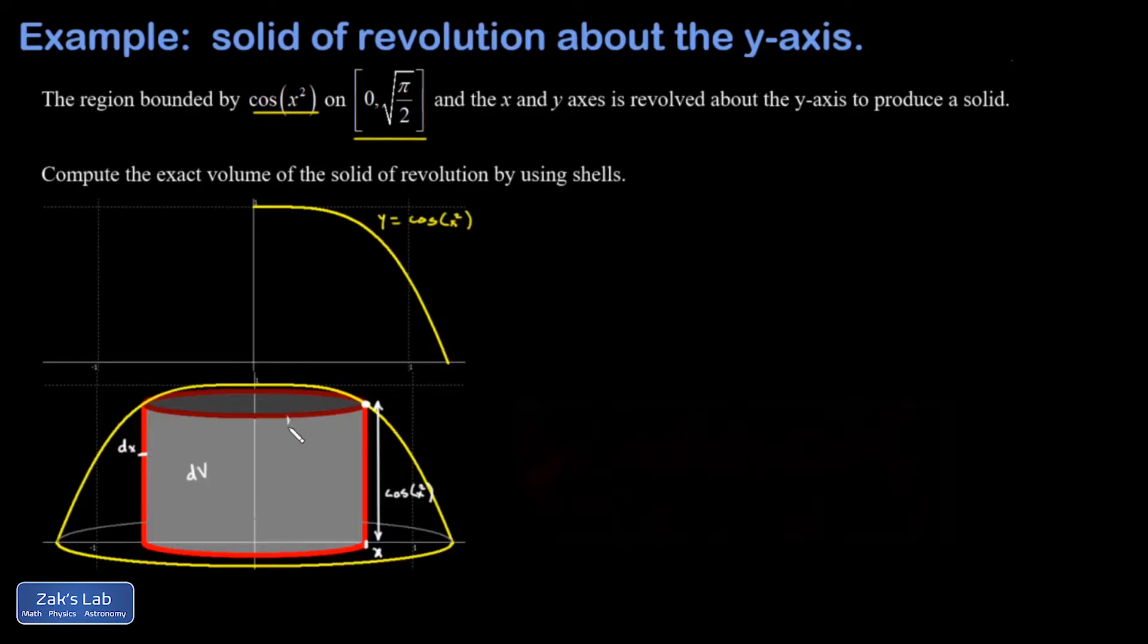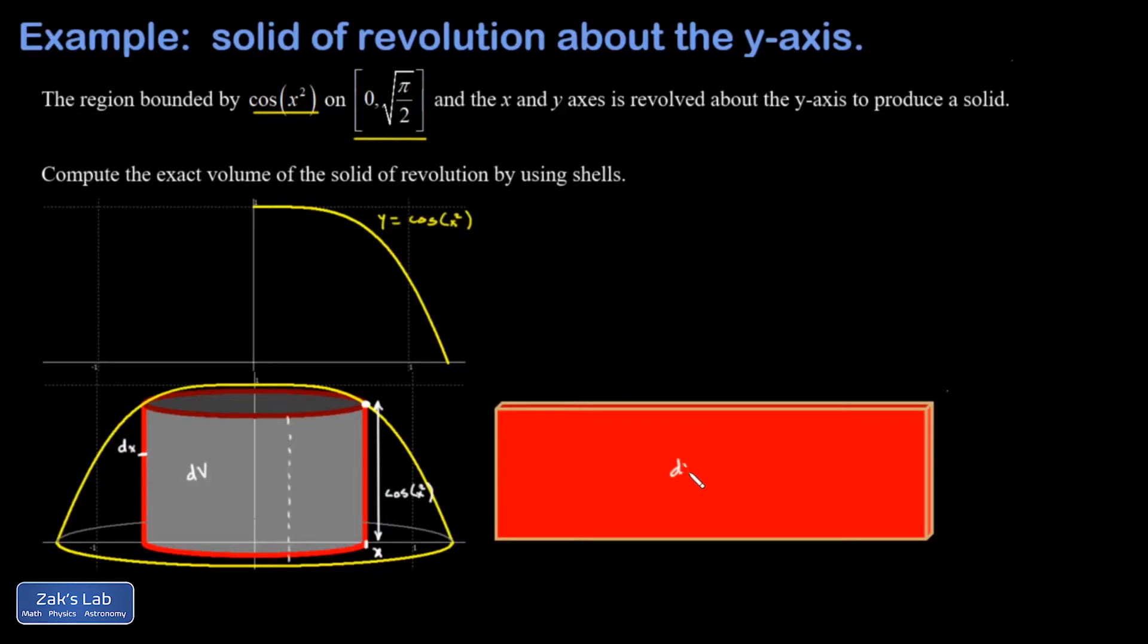So the next step is to cut and unroll the shell, and when I do that it looks something like this and we're going to compute the volume of this thing by using the formula for a rectangular solid.